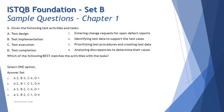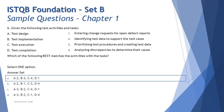That leaves 'entering change requests for open defect reports,' which is part of test completion. Managing defects that could not be closed is documented during the test completion phase. So the right answer is: A goes to 2, B goes to 3, C goes to 4, and D goes to 1 — mapping all activities with their respective tasks.